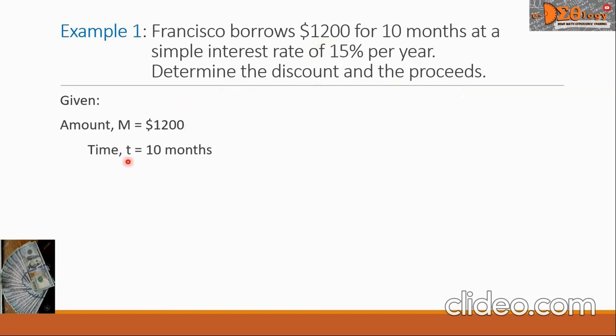Next is the time, denoted by T, and that is 10 months. This 10 months we will convert into a year, and we know that there are 12 months in a year. So we will have this 10 over 12, and this is the equivalent for a year. Next is the rate, denoted by R, and that is 15% per year. Let us convert this 15% into decimal. Let us put 15 over 100, dropping that percent sign. And the quotient of 15 over 100 is 0.15.